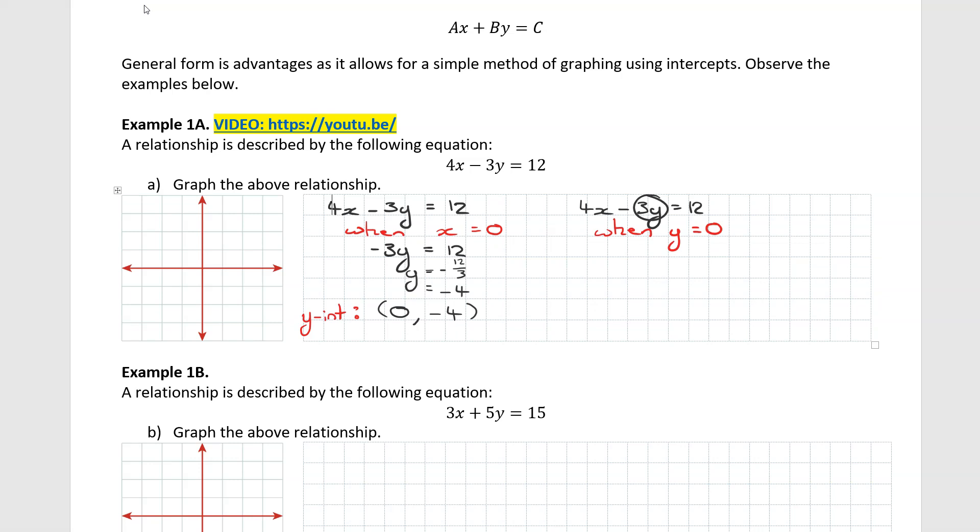Now because of that, this term here becomes nullified because anything multiplied by zero is zero. So all we're left with is 4x equals 12. Rearranging, dividing both sides by 4, we get 12 over 4. And therefore we find that x is equal to 3 when y is equal to zero. So therefore we find that our x intercept is at 3, zero.